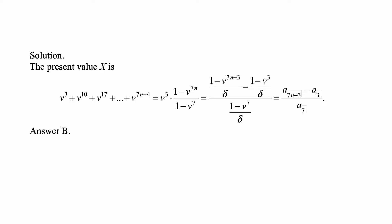Then v to the 3rd is the one that you get when n equals 1, right? 7 minus 4 is 3. When n equals 2, you get v to the 10th. When n equals 3, you get v to the 17th and so on.